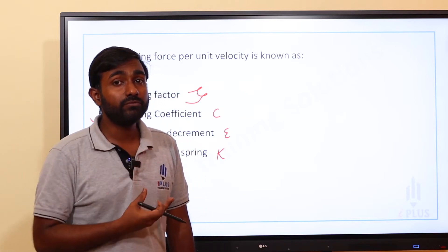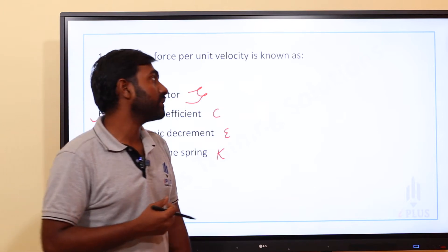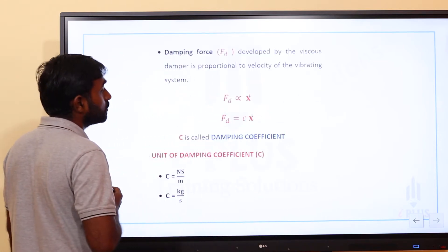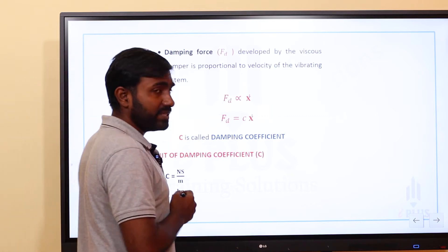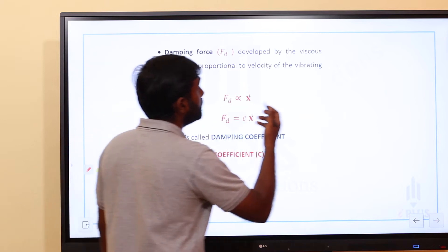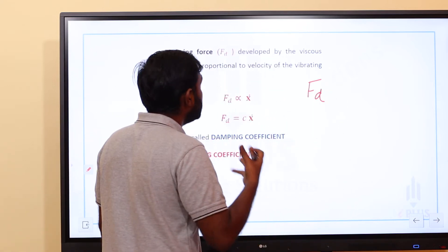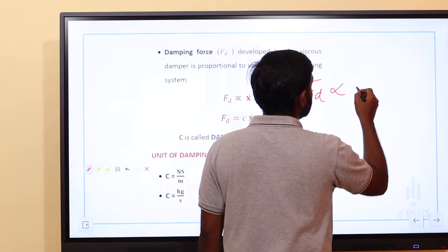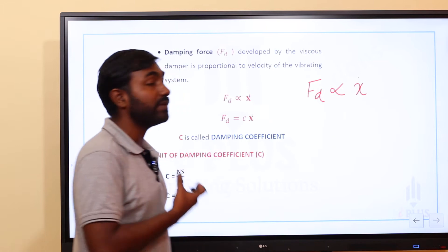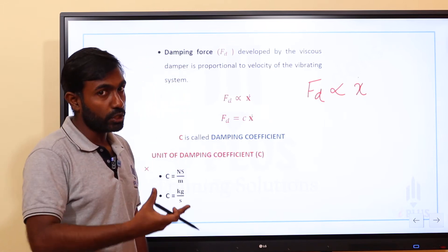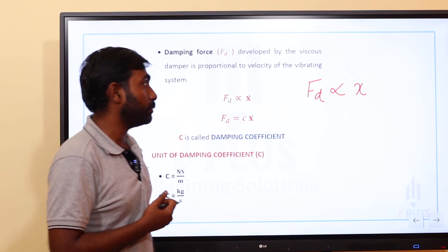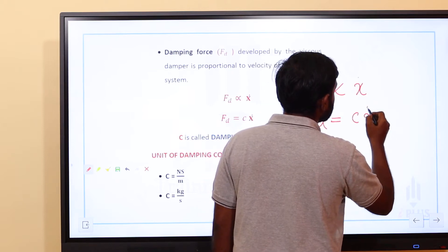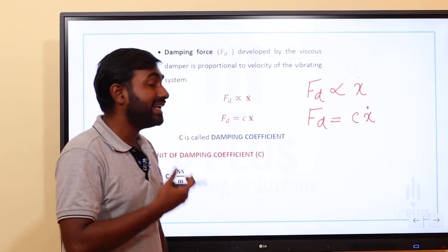Damping coefficient is C. The damped force is proportional to velocity x-dot. That is, FD is proportional to x-dot — that is, the velocity of the vibrating system. We know that damping force FD developed by the viscous damper is proportional to velocity of the vibrating system. So FD is proportional to x-dot.